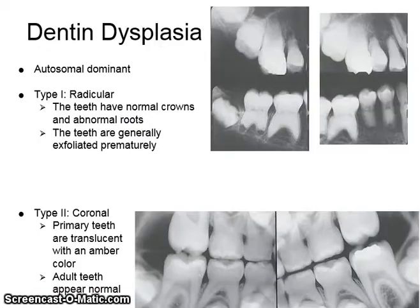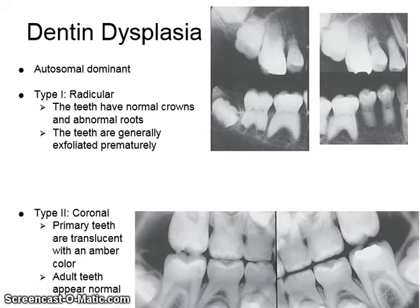Dentin dysplasia is autosomal dominant. Type 1 is radicular, where the teeth have normal crowns but abnormal roots and are generally exfoliated prematurely. Type 2 is coronal — primary teeth are translucent with an amber color, but the adult teeth appear normal.